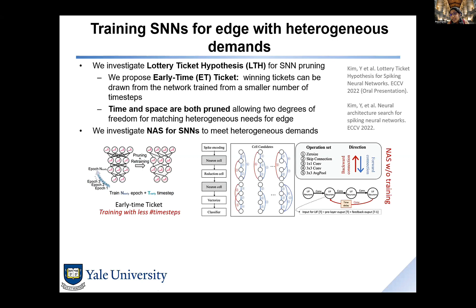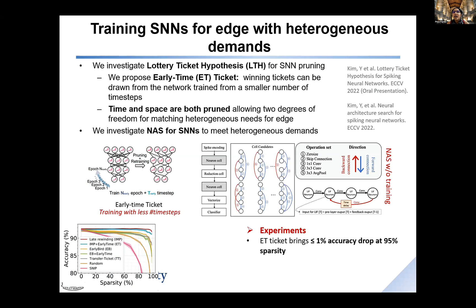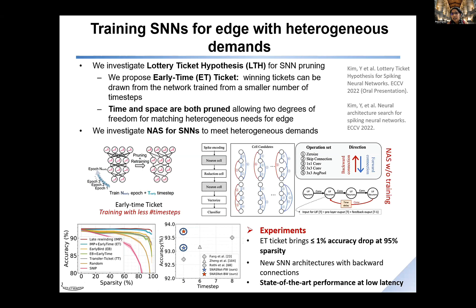With spiking models, if you have good temporal statistics integrated through a model and allow the network to search for correct architectures, it also searches for backward connections — meaning it learns information from previous time steps. When using neural architecture search or pruning techniques, we want to ensure we're not going beyond a certain accuracy-quality trade-off while maintaining the required level of sparsity or latency.